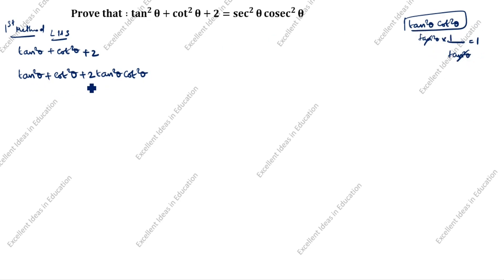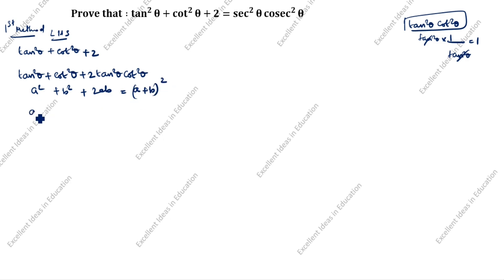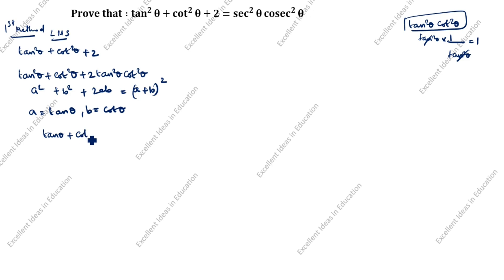Next step: what is this? A squared plus B squared plus 2AB. What is this formula? It is the (A plus B) whole square format. What is A? A is equal to tan theta. What is B? B is equal to cot theta. So A plus B whole square is (tan theta plus cot theta) whole square.